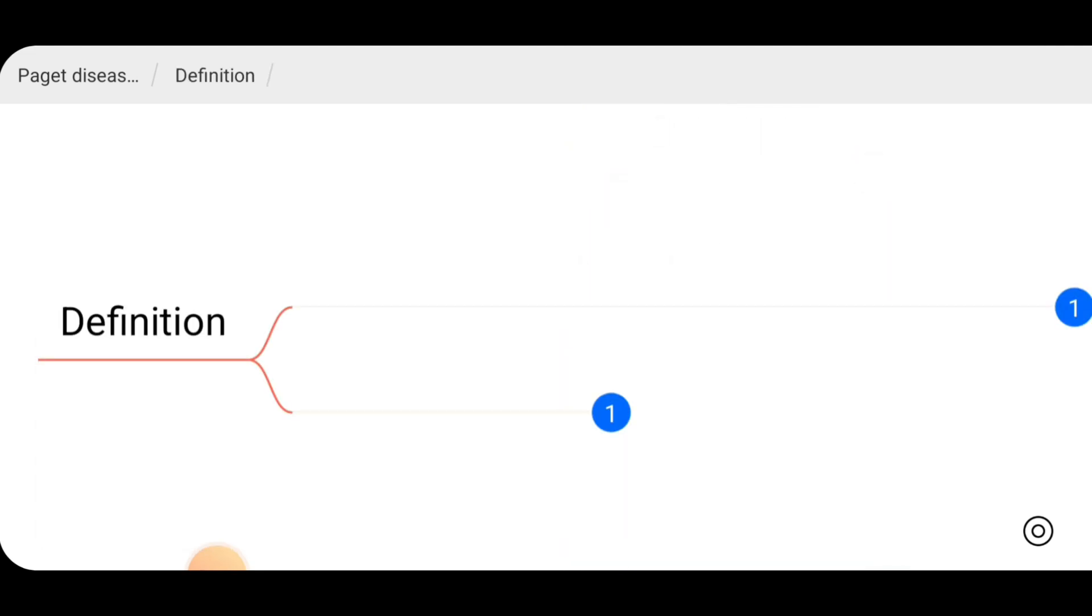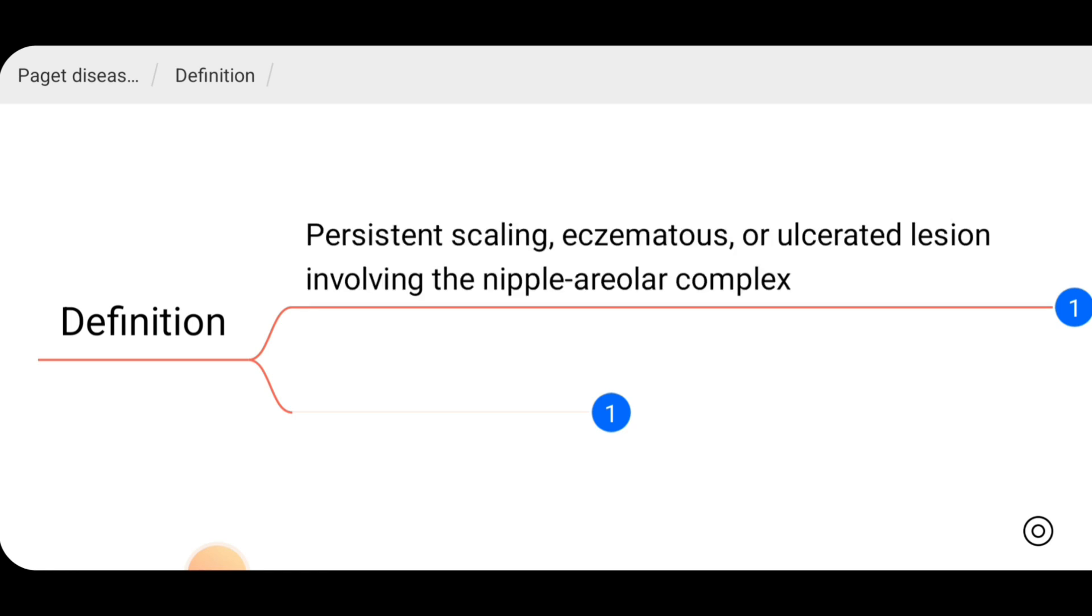The definition of Paget disease of the breast. There is another Paget disease which we call for bones as well. Here there is persistent scaling, eczematous or ulcerated lesion involving the nipple areolar complex.